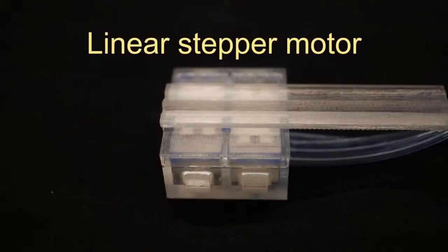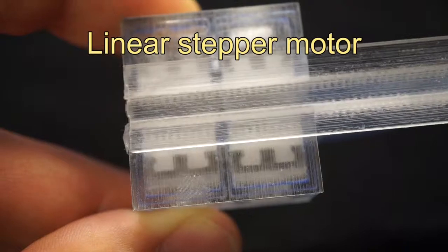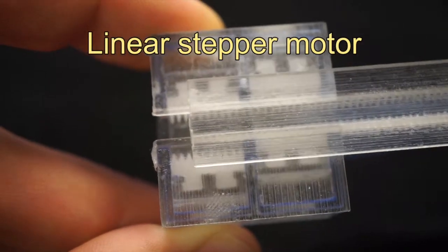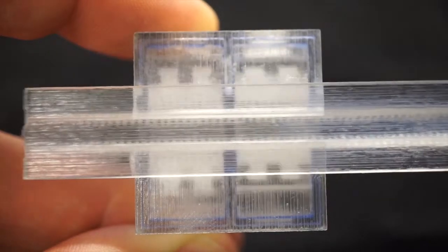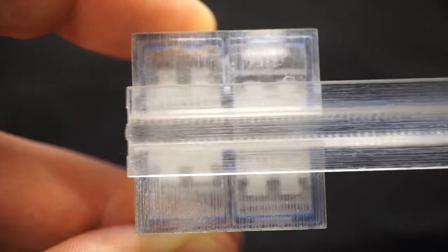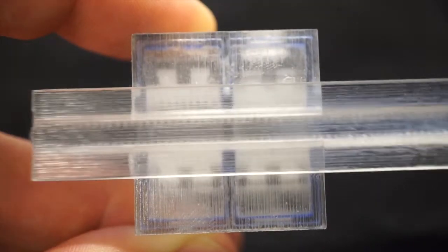This linear stepper motor consists of 2 double acting cylinders. The laser cut teeth of the pistons move the rack sideways in small steps.